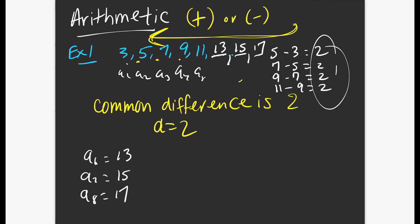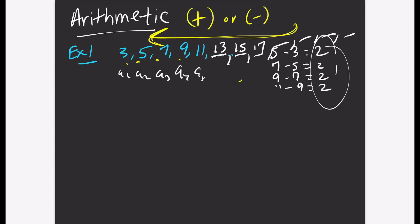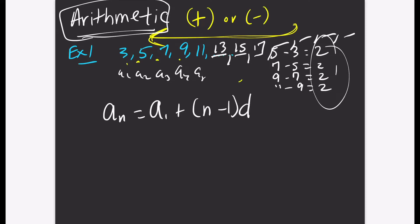Now let's say I asked you for the 50th term. If you keep the pattern going until you get to the 50th term you will get it, but there's a short way. To get the 50th term you use what's called the nth term, or the explicit rule, or the explicit formula. You would find this on the formula chart. For the nth term of an arithmetic sequence, the formula is: a sub n is equal to a sub 1 plus n minus 1 times d, which is the difference.